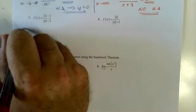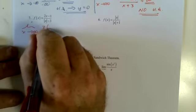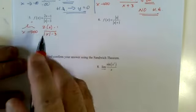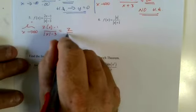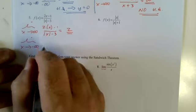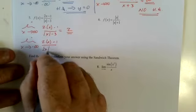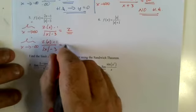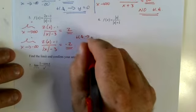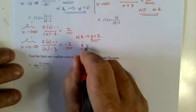This one we almost need graphing calculators for, but we'll swing it without. As x goes to infinity we get infinity over infinity — basically the leading coefficients give us two. As x goes to negative infinity we get negative infinity over positive infinity, so we get negative two, since the bottom will always be positive. So horizontal asymptotes at y equals two and y equals negative two.